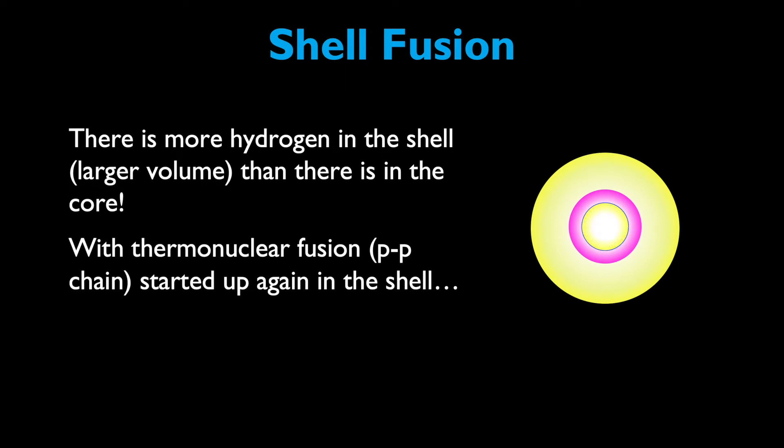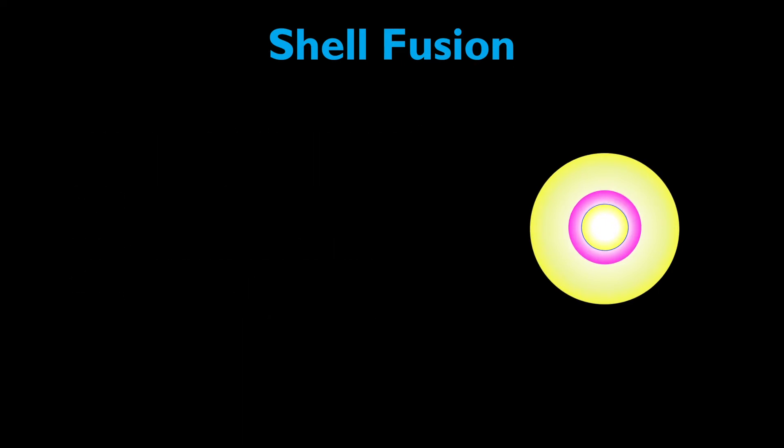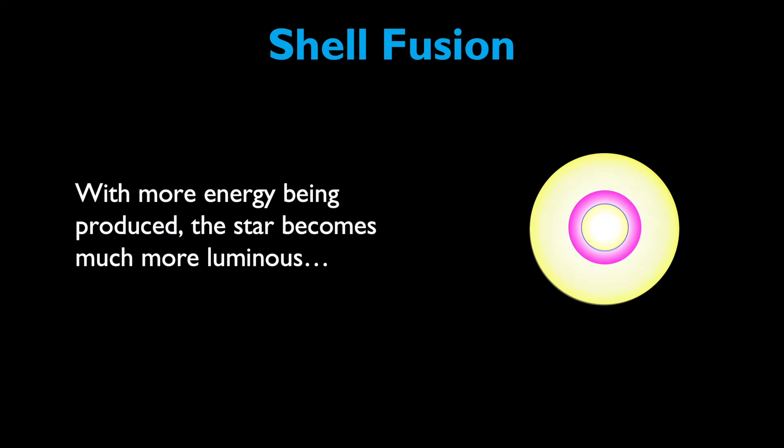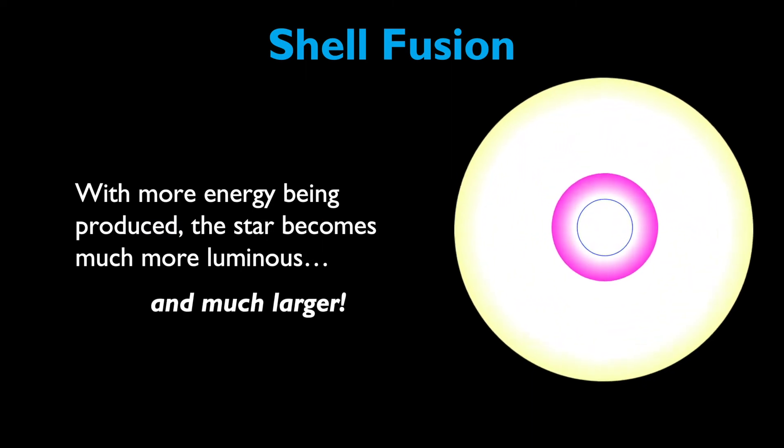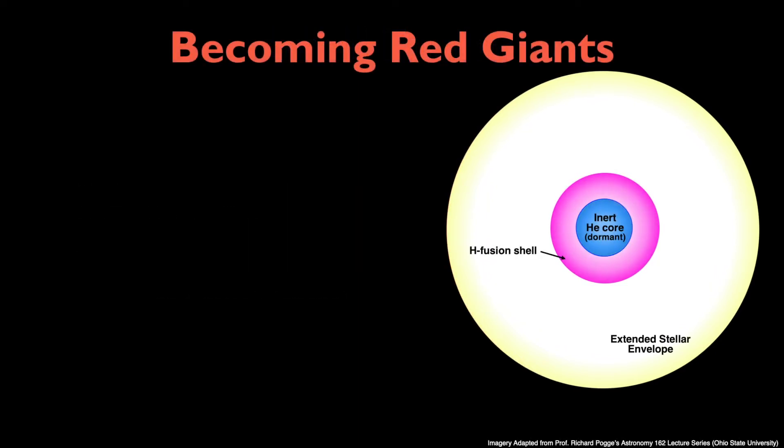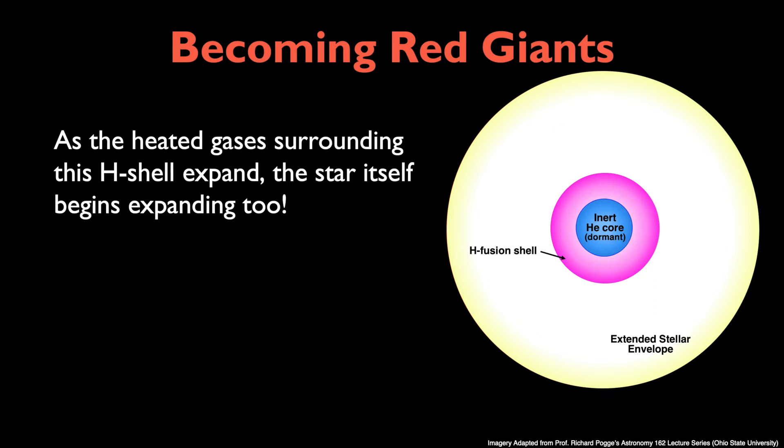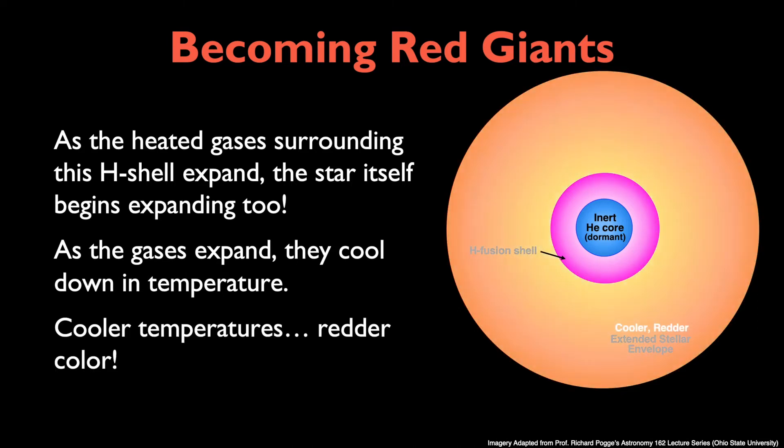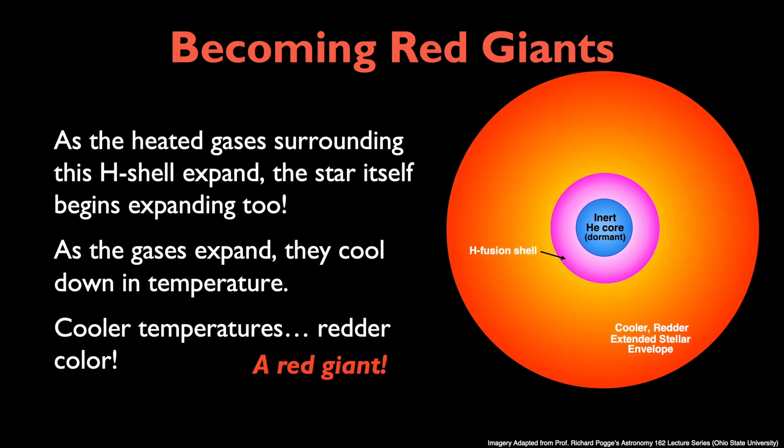With thermonuclear fusion, particularly the proton-proton chain, started up again in the shell, more energy is being generated in the star than before. With more energy being produced, the star becomes much more luminous and much larger. As the heated gases surrounding this hydrogen shell expand, the star itself begins expanding too and grows larger. As the gases expand, they cool down in temperature. Cooler temperatures mean a redder color, so the star is now considered a red giant.